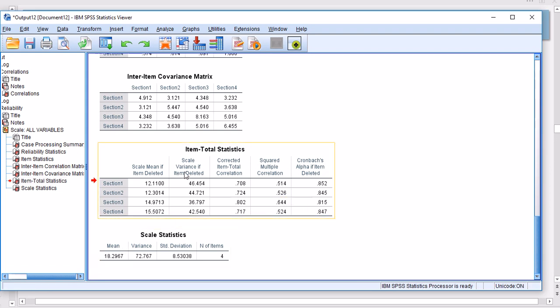And then scale variance if item deleted changes somehow. If, for example, item number 3, that's section 3, is deleted, the variance drops down quite significantly. And scale mean if item deleted is also another indication of what changes in your scale if you delete that item.